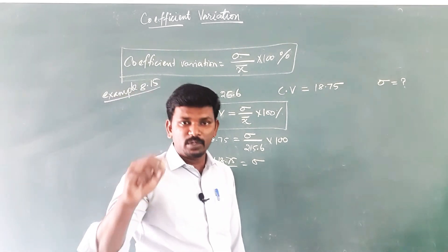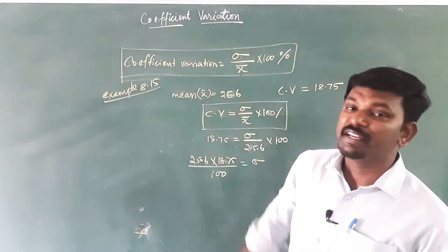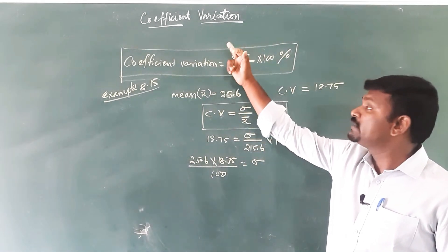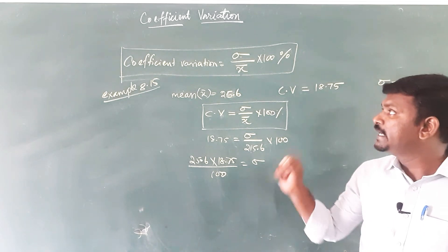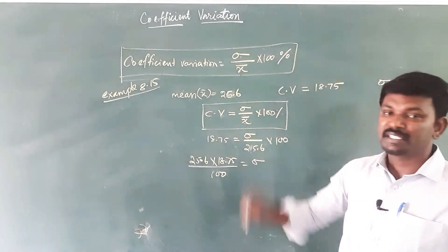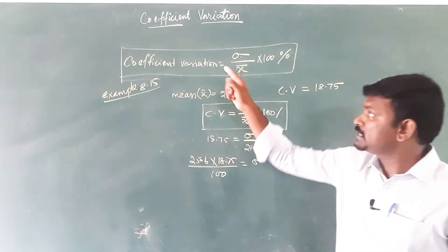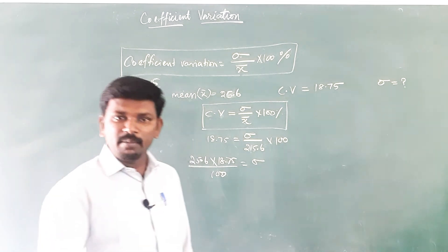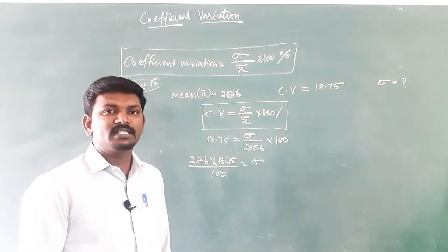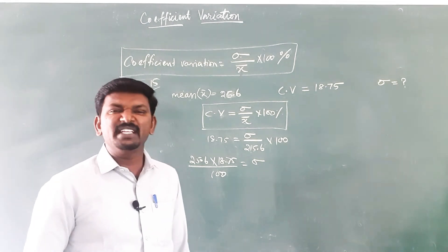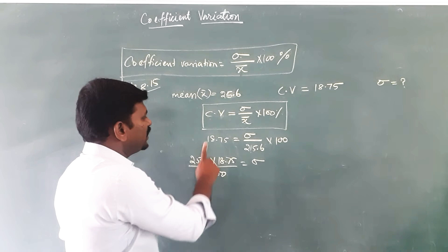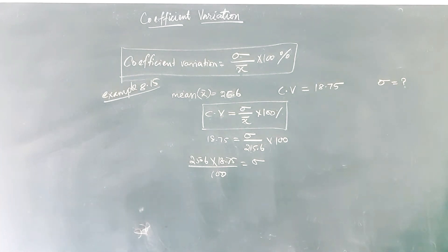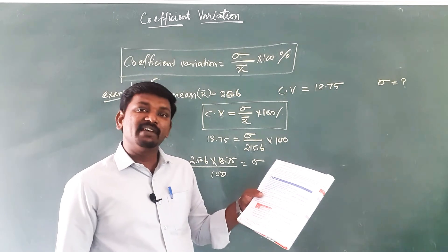One more important point about coefficient of variation: if we compare two datasets using their coefficient of variation, the data which has a lesser coefficient of variation is the most consistent and stable data. If the coefficient of variation has a greater value, the values of the data will vary more.